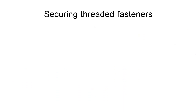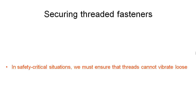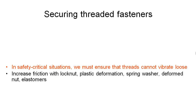In applications where it's very important that our fasteners don't come undone, we have a variety of techniques to ensure that they stay done up. For things like cars and aircraft in particular, we really want to make sure these threads don't vibrate loose, because all that's really holding them together is friction when we tighten them up. We can increase friction with a lock nut, use plastic deformation, spring washers, deformed nuts, elastomers, etc.